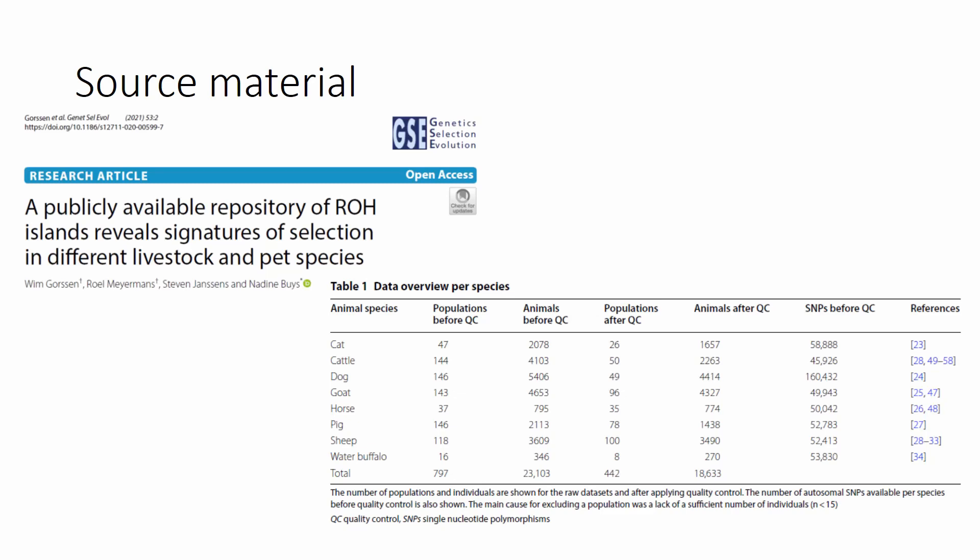Let's start with our source material, which is a secondary source. I found this paper in Genetic Selection Evolution and it actually lists most of the data I'm going to talk about. Great thanks to Gorsen and co-authors for this summary. This paper itself proves that you can publish a high-impact paper in an extremely high-level journal such as Genetic Selection Evolution with data entirely from public resources. On top of this summary I give you additional details on the data and also my own comments.